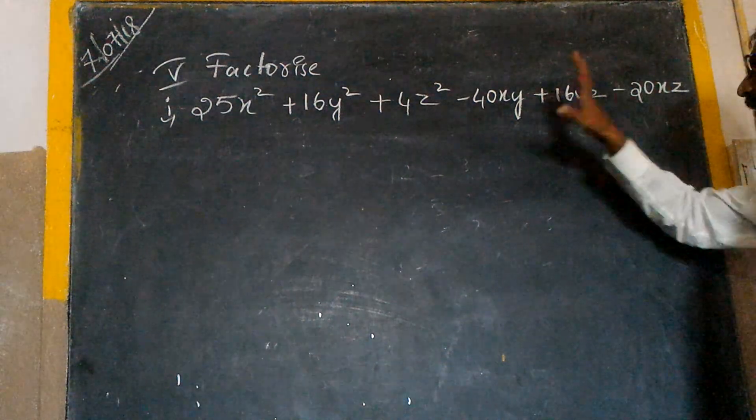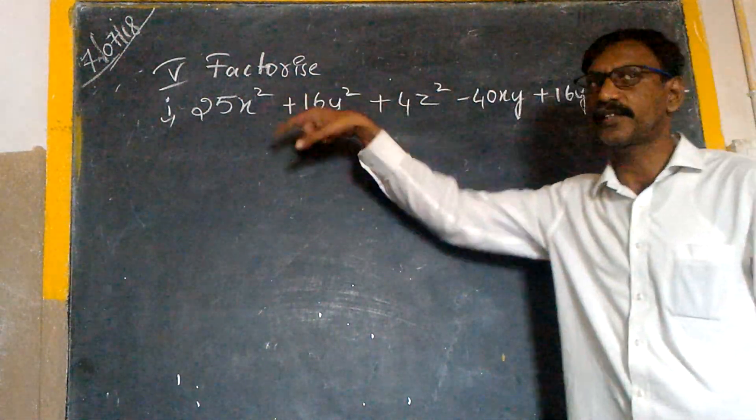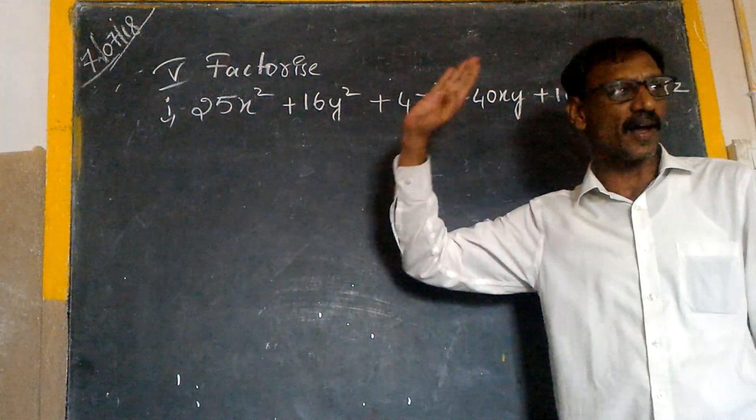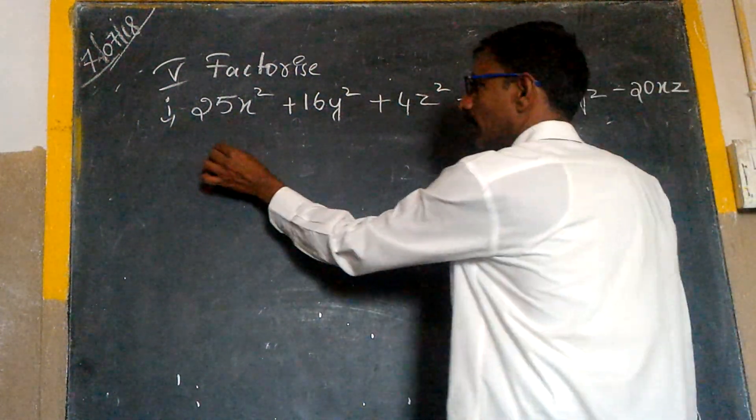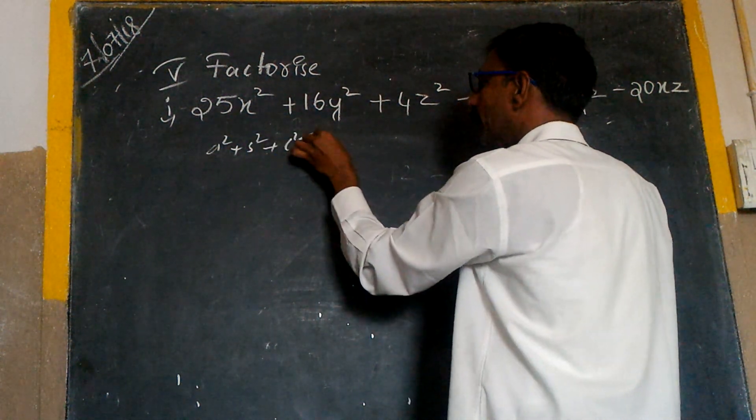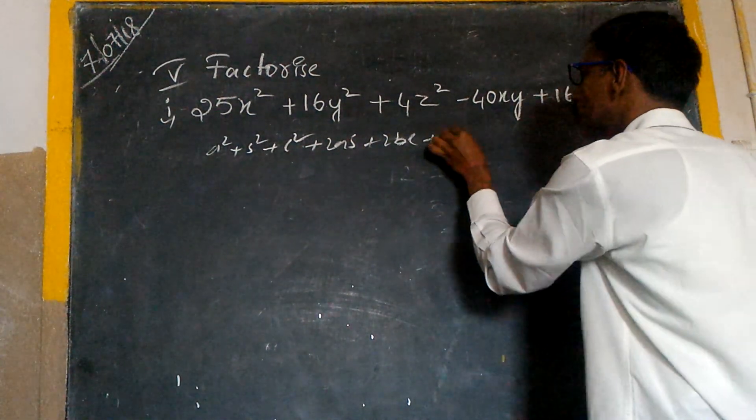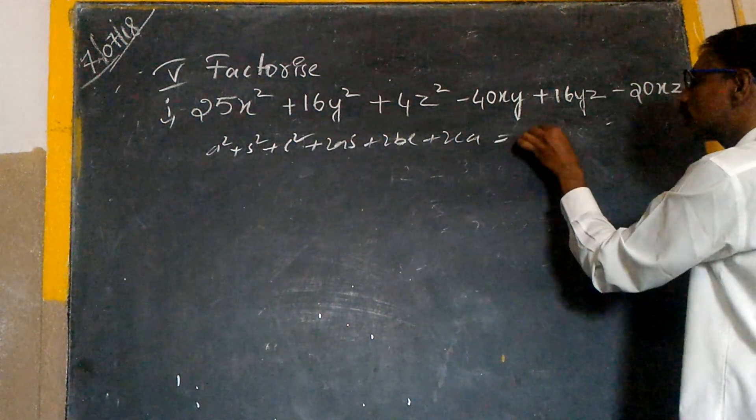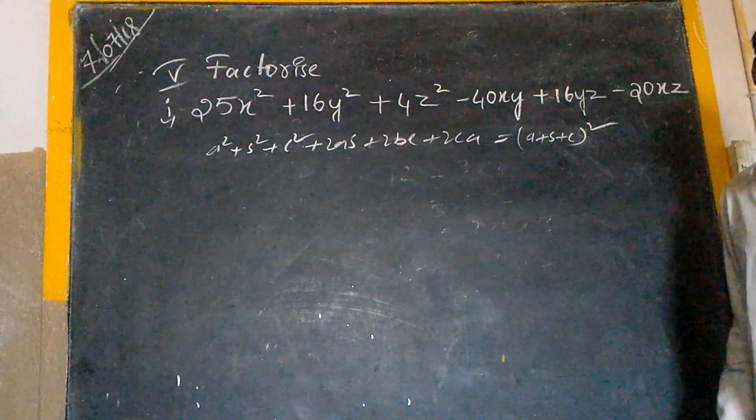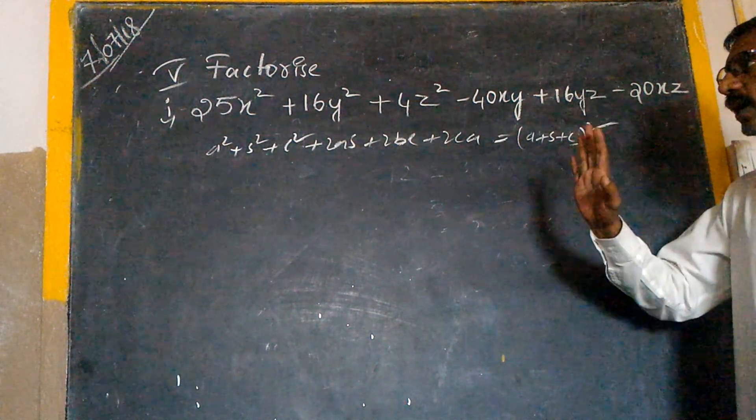Here and here we have minus. This is for only X. But this you should write in the form of a square plus b square plus c square plus 2ab plus 2bc plus 2ca, that is equal to a plus b plus c whole square. Then only we can factorize this one.